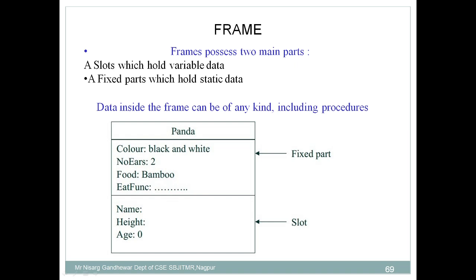Let's take a simple example of a panda. Panda is one object for which I have created this frame, and this frame consists of two parts. In the slot, I mention the name — the name of a particular panda can change; for example, I say the name is A, then later I can change it to B, so it is changeable. Then height of a panda — when the panda is small its height is less, and as the panda grows up, the height changes. So in the slot we put attributes whose value may get changed. Similarly, age is also an attribute whose value changes continuously.